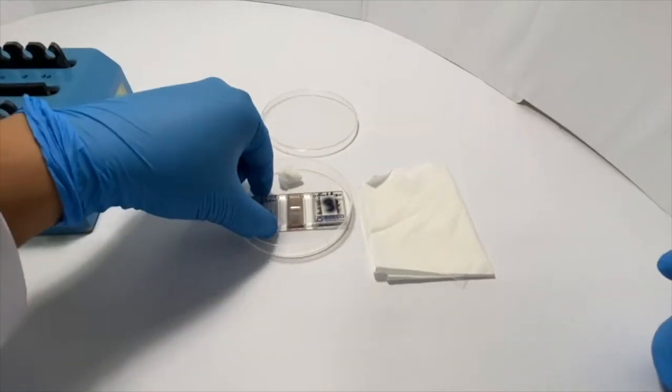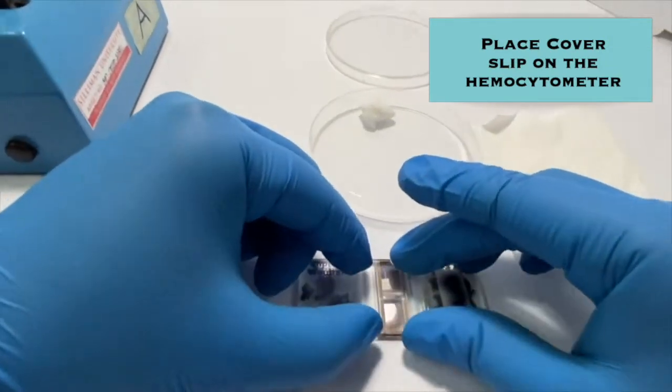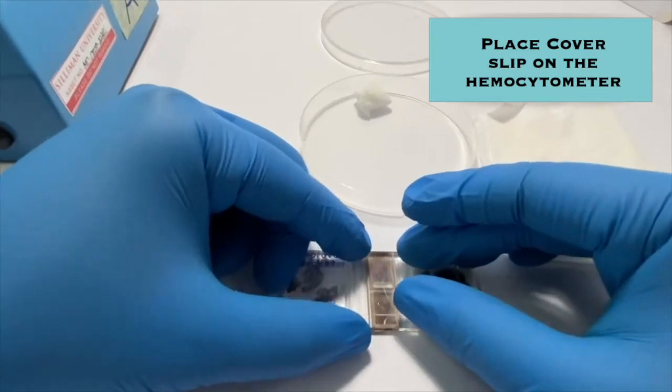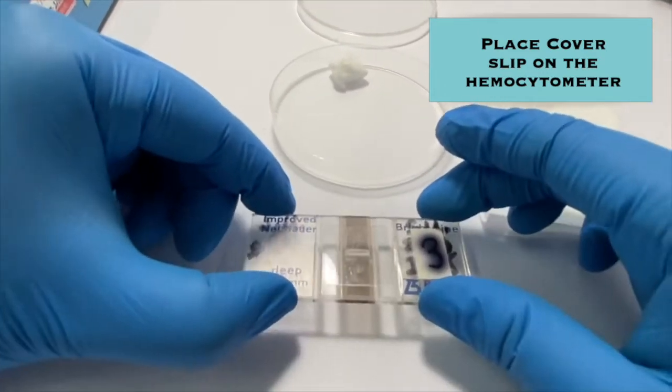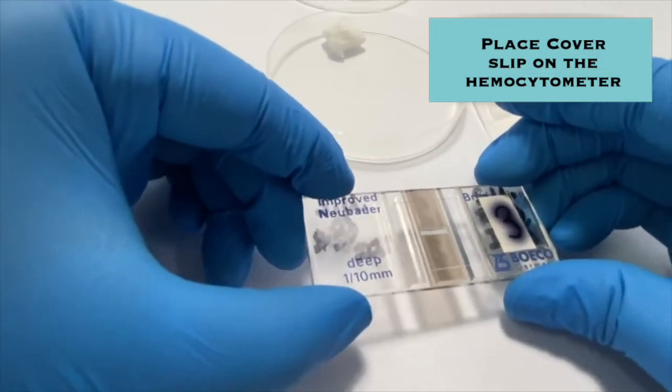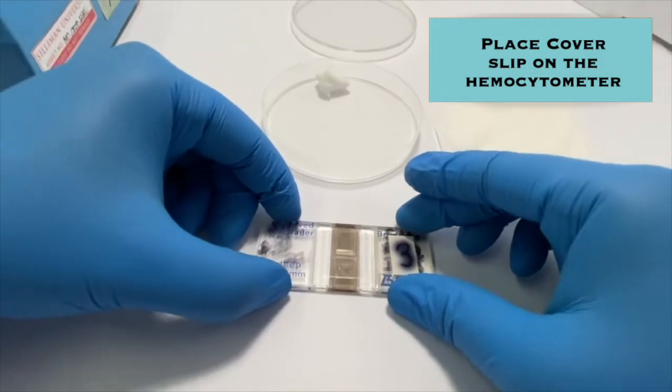Let's first assemble the hemocytometer. Place it on a flat surface. Then take your coverslip and gently place it on top of the hemocytometer. As you can see, the hemocytometer has two counting chambers, one on the top and one on the bottom. Make sure that your coverslip is covering both sides equally.